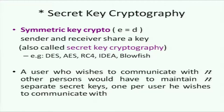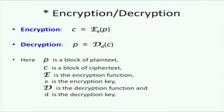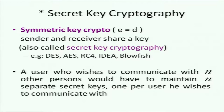In symmetric key cryptography, E is equal to D — the encryption key equals the decryption key. A quick question: in public key cryptography, which is the private key and which is the public key? The public key is the encryption key, little e, and little d is the private key. Always remember: to decrypt the message you need to use the private key, so little d must be the private key. In symmetric key cryptography, the encryption key is the same as the decryption key — the sender and receiver share a key, also called secret key cryptography.